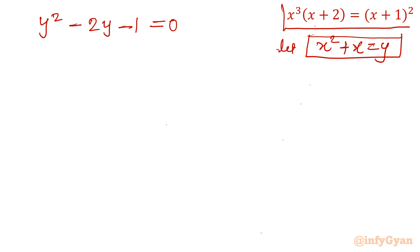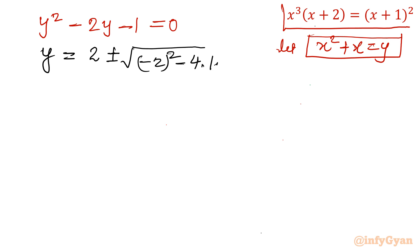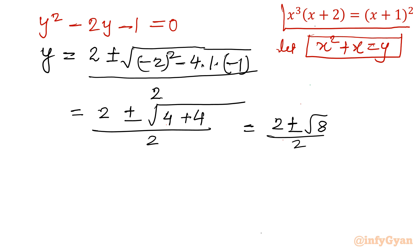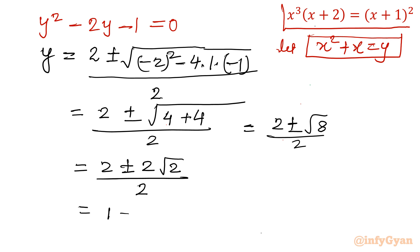First we have to solve this quadratic equation which is in y. Applying the quadratic formula: y equals minus b, so 2 plus minus square root of b² minus 4ac. Here b is minus 2, so minus 2 squared is 4, plus 4, divided by 2. This gives us 2 plus minus square root 8 over 2. Now 8 can be written as 4 times 2, so the second term is 2√2 divided by 2. Dividing by 2, we get y equals 1 plus minus root 2.